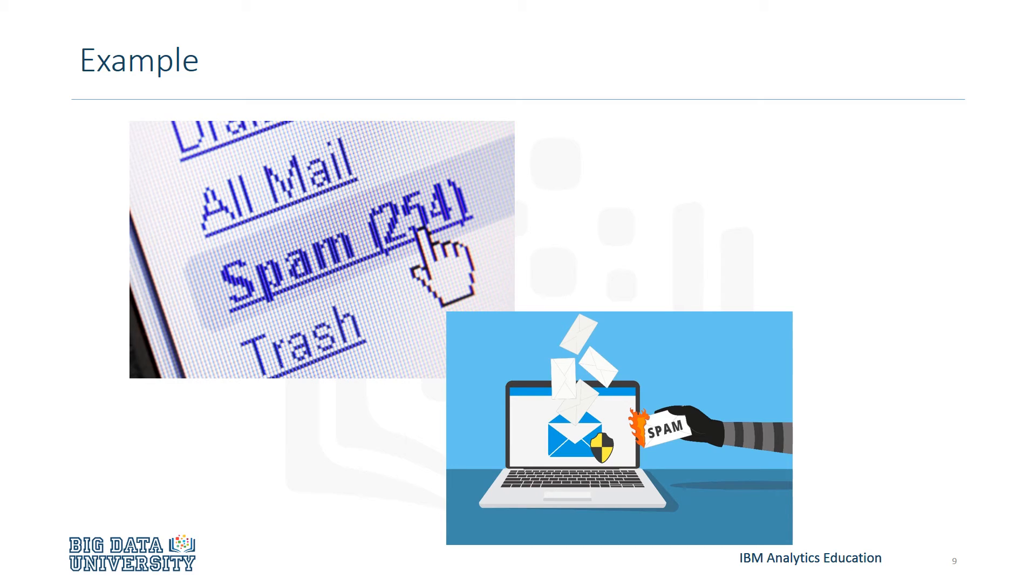A good example of where machine learning can be applied is email. Think about all the emails that you receive every day. Do you get 10, 20, 100, maybe even 1,000 a day? How much of that is ham or spam? Your email likely uses machine learning to help categorize this based on specific words that may indicate that the email is spam, and helps use that information to categorize and relate emails that are similar.